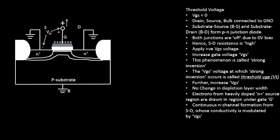That N-channel already existed at the point of strong inversion. But if you further increase the gate voltage, you see a channel that is even thicker than before. From this we can conclude that conductivity is modulated by the gate voltage: lower gate voltage means a narrower channel and lower current; higher gate voltage means a wider channel and higher conductivity. That is how you can modulate conductivity using gate voltage.